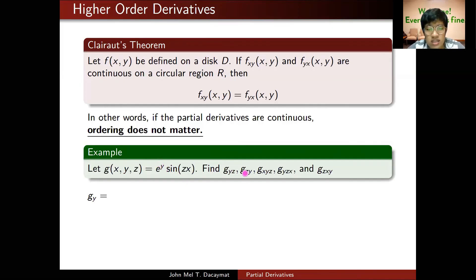Let me use Clairaut's. For the first two, g sub yz and g sub zy, I'll just get g sub yz. g sub zy will be the same thing. To get g sub yz, I'll find g sub y first. Taking the derivative with respect to y: e to the y is the only part with y. sin(zx) is just a constant. So sin(zx) times the derivative of e to the y, which is e to the y. So this is my g sub y.